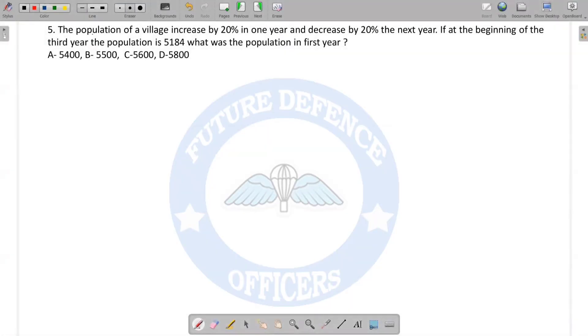The question tells us the population of a village increases by 20%. Let's take the population of the village as 100x. I've taken 100x because it makes percentage calculations easy. Now we want to increase it by 20%, so let's increase it.